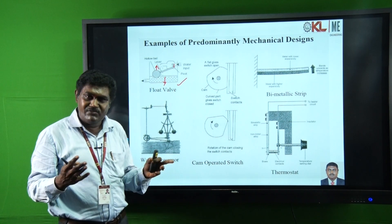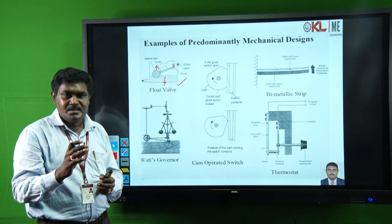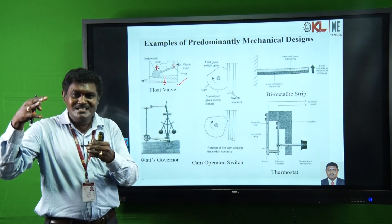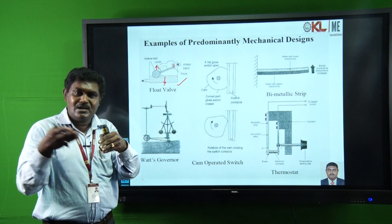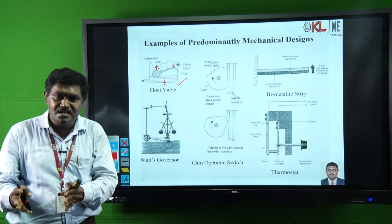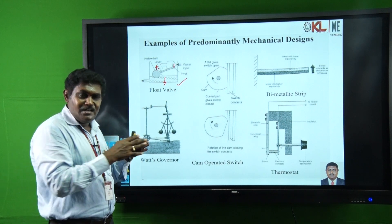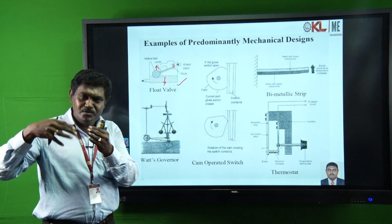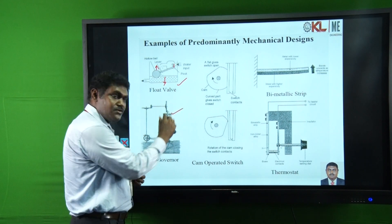The governor is used to maintain the required speed of the engine. According to the engine output, the load may be varying — if the load increases, speed decreases; if the load decreases, speed increases. We are giving the same fuel injection input but the load varies, so the speed of the engine fluctuates. In order to maintain uniform speed, we use the governor, which adjusts the fuel injection inside the engine according to load variations, maintaining uniform speed irrespective of load fluctuations.